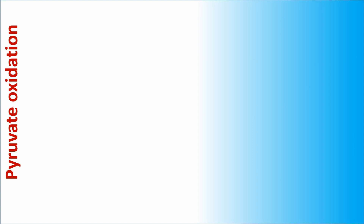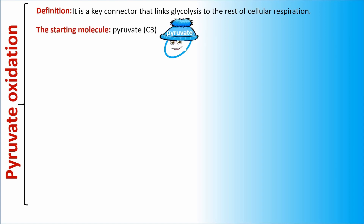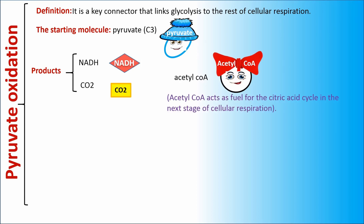Pyruvate Oxidation is a key connector that links glycolysis to the rest of cellular respiration. The starting molecule is pyruvate, and the products are NADH, CO2, and acetyl-CoA. Acetyl-CoA acts as fuel for the citric acid cycle in the next stage of cellular respiration.